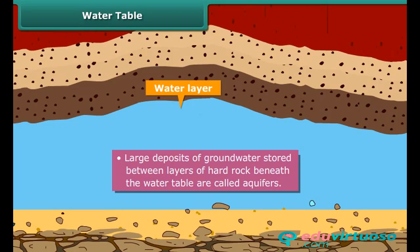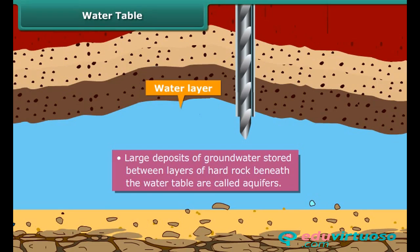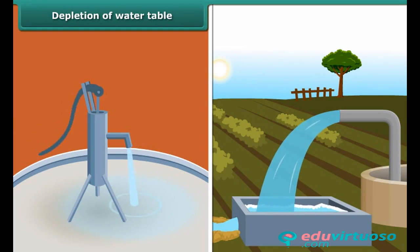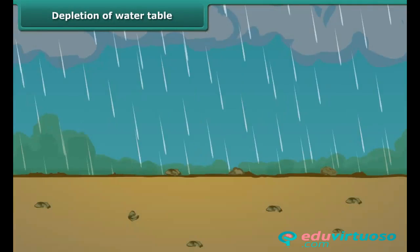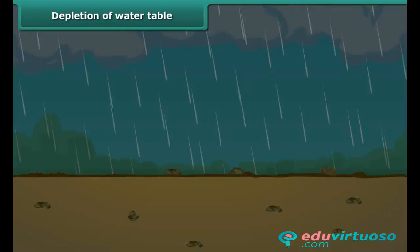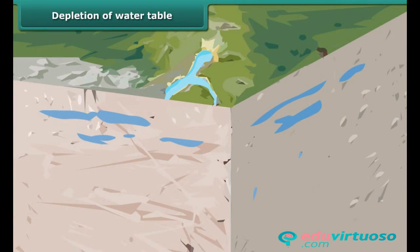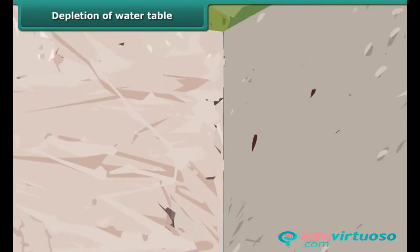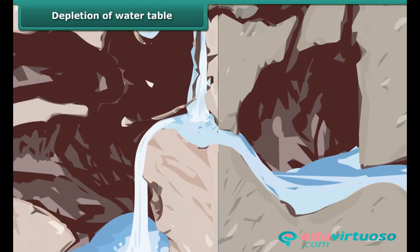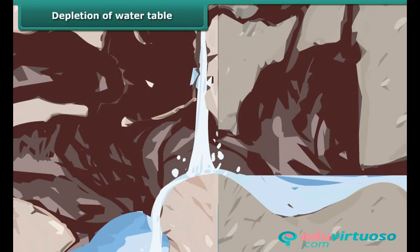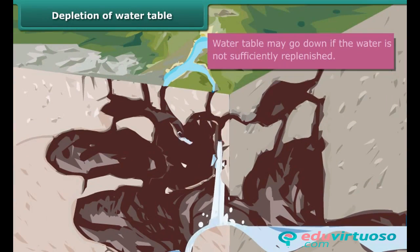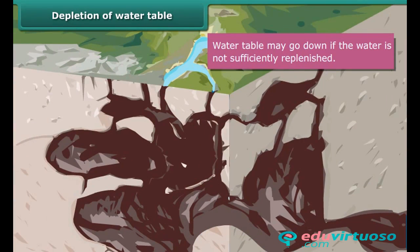Large deposits of groundwater stored between layers of hard rock beneath the water table are known as aquifers. Water in aquifers is usually pumped out by digging wells at locations where the water table is close to the surface. Water drawn from the groundwater gets replenished by seepage of rainwater. The water table does not get affected as long as we draw only as much water as is replenished by natural processes.